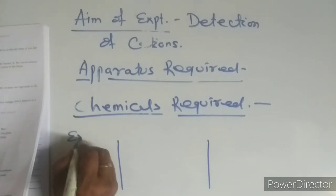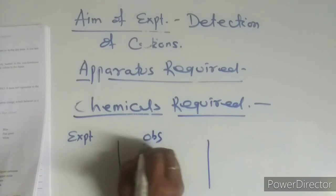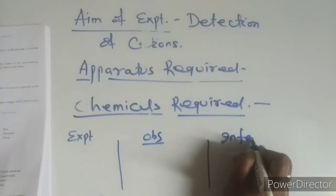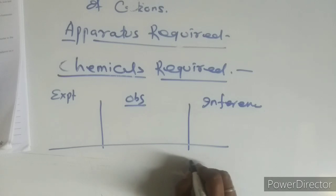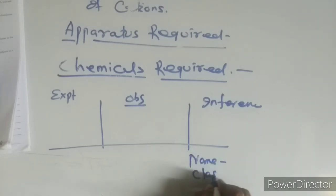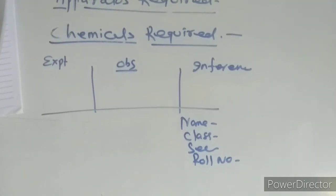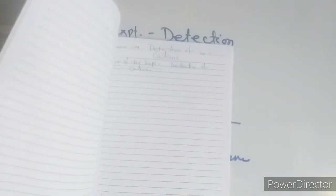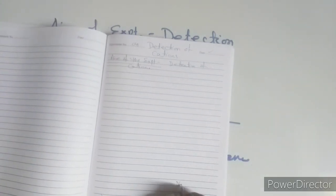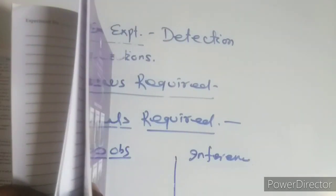Then write the three columns: experiment, observation, and inference. After writing and finishing this experiment, you will write your name, class, section, and roll number. After completion of each experiment you must mention your name, class, and section — this is a must. Then let us go for the fifth experiment.